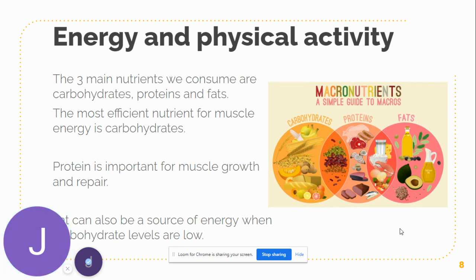From our nutrition unit, we've already covered that the three main nutrients we consume are carbohydrates, proteins, and fats. The most efficient nutrient for muscle energy is carbohydrates, but when carbohydrates are low, your body will resort to fat as an energy source. Protein is very important for muscle growth and repair. We want to make sure we're consuming enough of these nutrients when involved in physical activity, so that our energy will be more sustained.